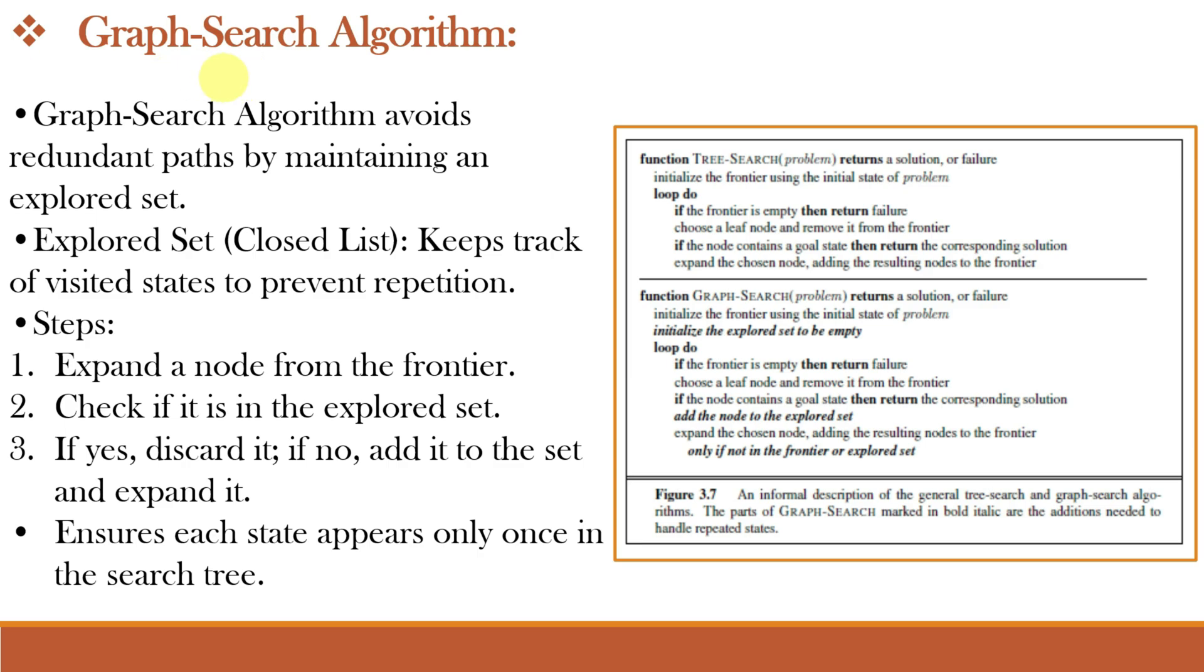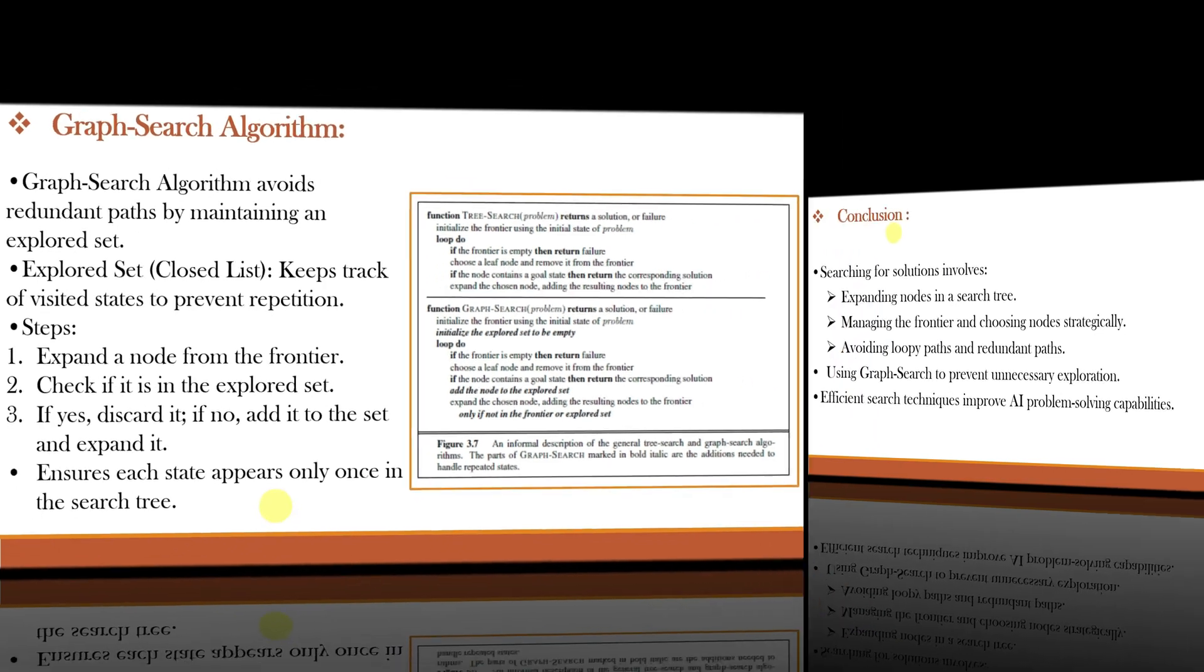A better search algorithm is a graph search algorithm. Graph search improves upon the tree search by preventing repeated expansions. It remembers the visited states in the explored set which is also called the closed list. This closed list keeps track of visited states to prevent repetition. This prevents cycles and makes the search more efficient. Now, we grow a tree directly on the state space graph eliminating redundancy.